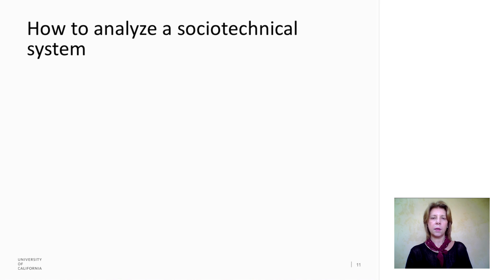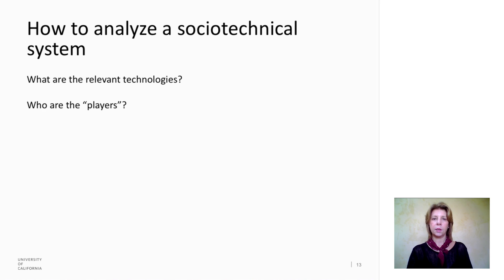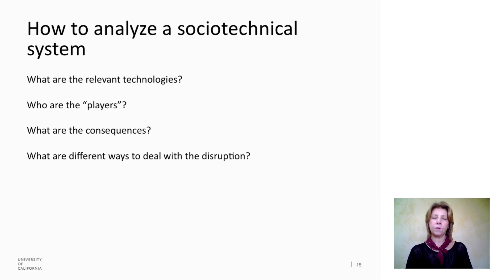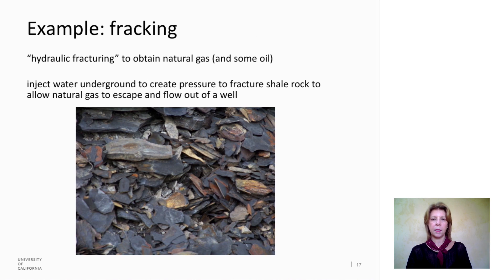This analysis is going to look a little bit like what we did for the analysis of human well-being. The first question is: what are the relevant technologies? Who are the players or the stakeholders? What are the consequences? If there is a disruption, what are the different ways to deal with it? And who pays? Let's take the example of fracking. Fracking stands for hydraulic fracturing.